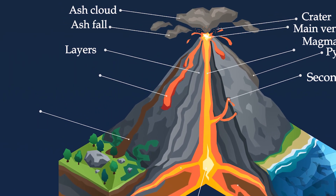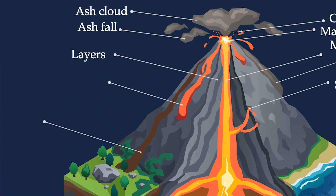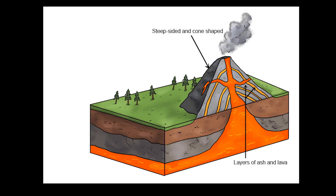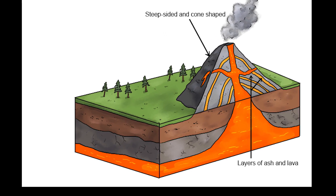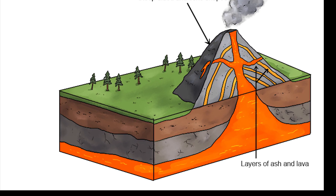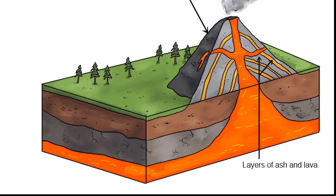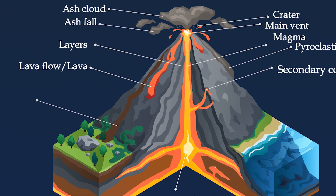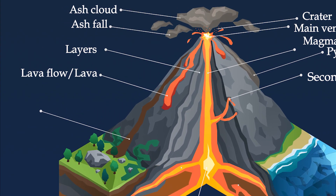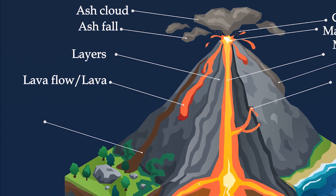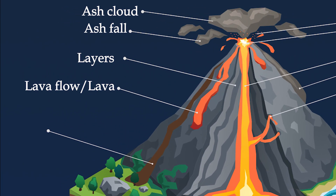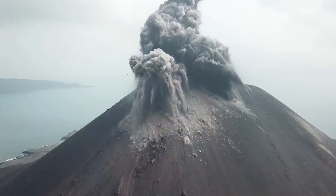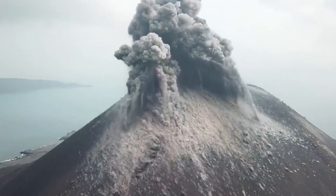Layers of ash and cooled lava are typical of composite volcanoes. Lava flows are streams of molten rock that pour or ooze from an erupting volcano.